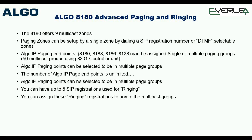The number of Algo paging endpoints is unlimited — you could have an 8180 as the master pager and then hundreds of other slave 8180s. When you page the master, everyone else pages at the same time. You can put them into multiple page groups. Also, you can have up to five SIP registrations used for ringing — so if you've got a warehouse and an incoming call comes in, consider this scenario: what if you've got two different companies or departments?